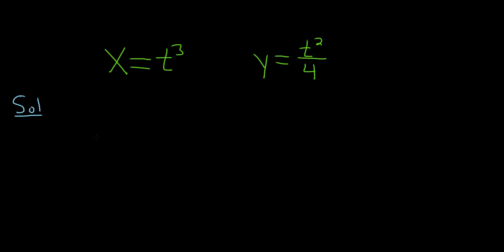We'll start maybe by writing them in rectangular form. So to do that, one strategy is to basically take this first equation here and solve it for t. So if we have x equals t cubed, taking the cube root of both sides will give us the cube root of x equal to t. In other words, t is equal to the cube root of x.